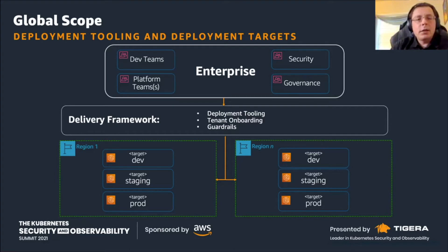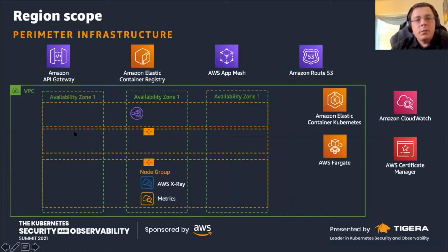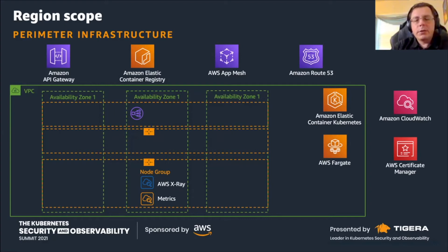Moving to the region scope, infrastructure provisioning is not going away. Somebody needs to take care of provisioning your VPC with subnets in different availability zones, and have metrics and tracing enabled on the perimeter side. We probably want to expose our APIs — maybe dealing with API Gateway and Route 53. There's also Elastic Container Registry, and on the security side there will be Certificate Manager, KMS, and a lot of other services from the security portfolio.